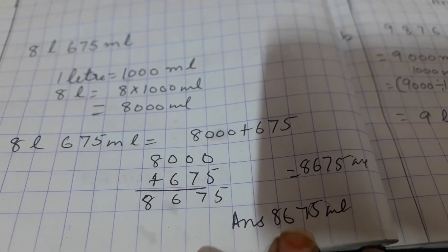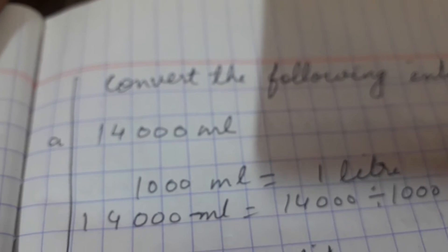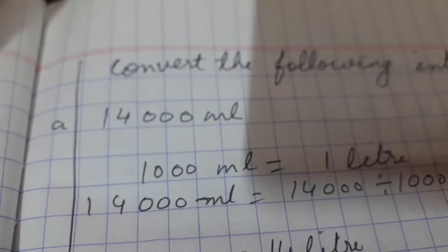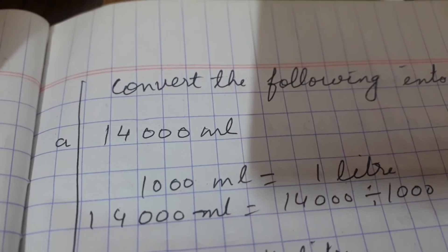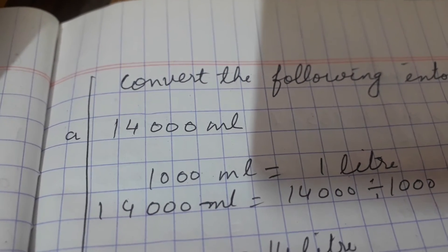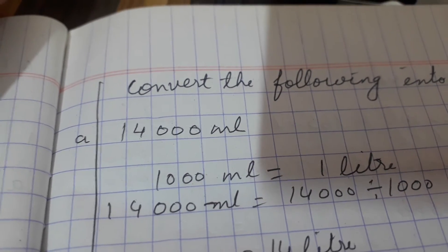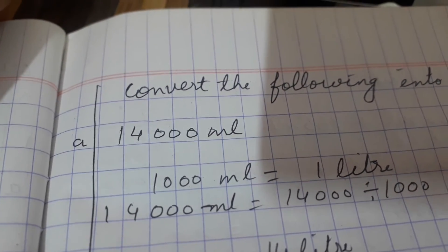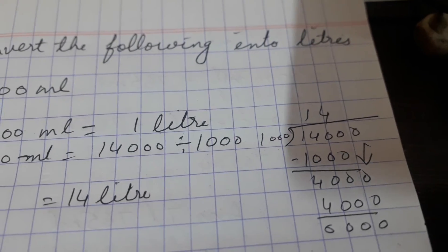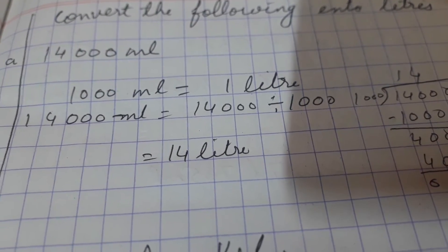Now we will do the reverse — vice versa. Convert the following into liters. The question is in milliliters: fourteen thousand milliliters. Milliliters is a smaller unit and liters is a bigger unit. So when we convert milliliters into liters, we divide by one thousand. Fourteen thousand milliliters divided by one thousand equals fourteen liters.